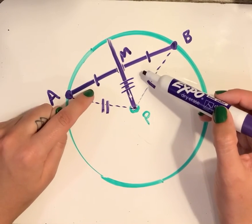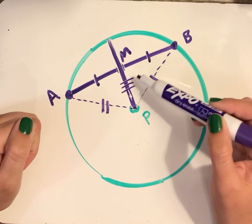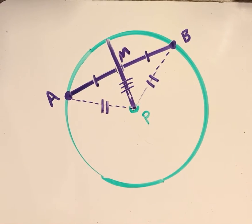So now I can see that these two triangles are congruent based on side, side, side congruence. So because they're congruent triangles,